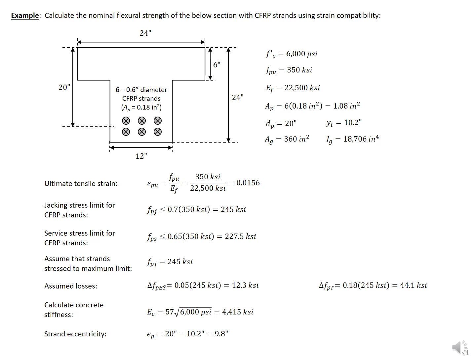In this video, we're going to calculate the nominal flexural strength of the beam section with carbon fiber reinforced polymer strands. To find the flexural strength, we're going to use the strain compatibility approach. We can see that it's a T-section with six 6/10th diameter strands. The area of these carbon fiber strands is specified as 0.18 square inches, so our total area is six times this area. Our D, taken from the extreme compression fiber to the centroid of all strands, is 20 inches.